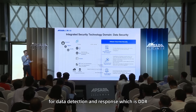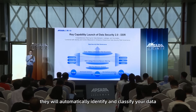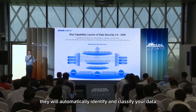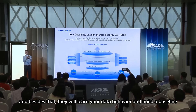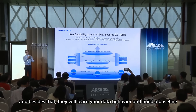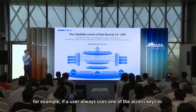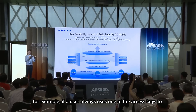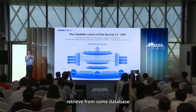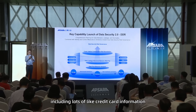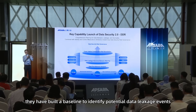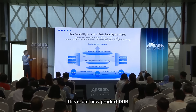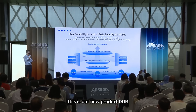We are going to launch DDR — Data Detection and Response. It will automatically identify and classify your data including sensitive data. It will also learn your data travel behavior and build a baseline. For example, if someone uses an access key to retrieve large amounts of database data such as credit card information in an unusual pattern, DDR will detect this against the baseline and identify it as a potential malicious data leakage event. This is our new DDR product.